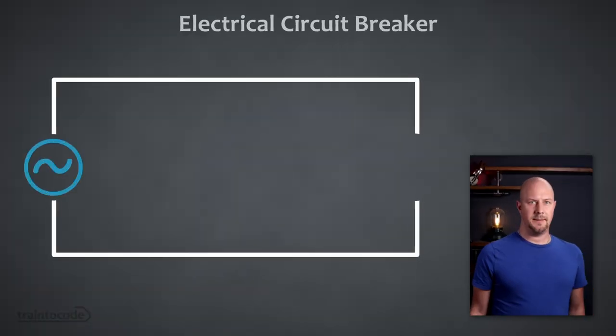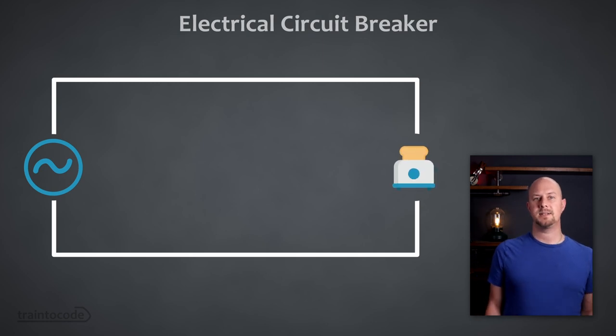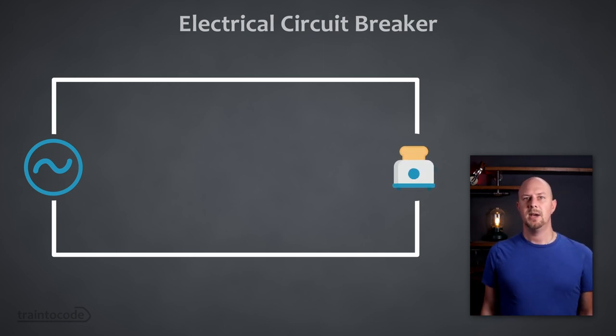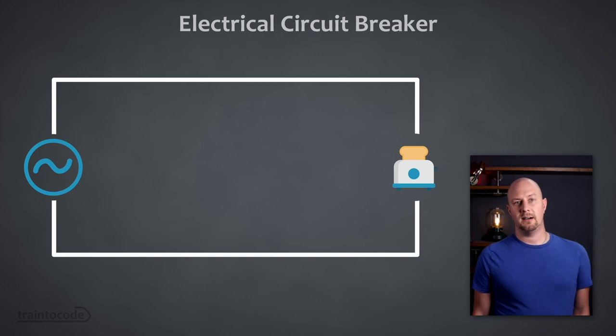The term circuit breaker comes from electrical circuits. When an electrical circuit has an energy source and a load, you get a current flowing around the circuit, and that current is the same at all points along the path of the wire. In this example, we've got a main supply coming into our house as a source of electrical energy, connected to a toaster that might be drawing five amps of electricity, which can be measured at any point around this circuit.